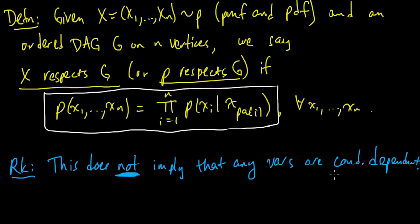It only implies that certain random variables are conditionally independent, but it does not imply that they are necessarily dependent or conditionally dependent. So let me give you an example of that.